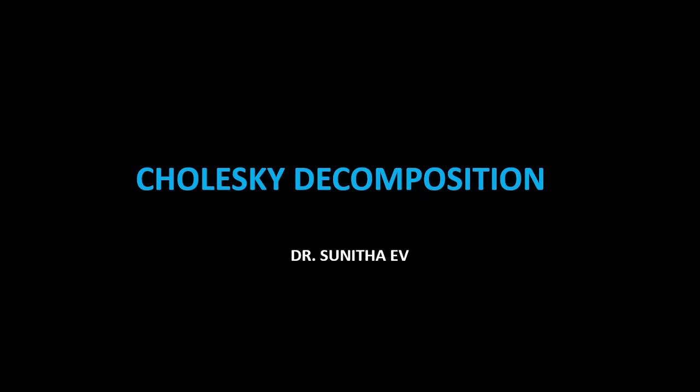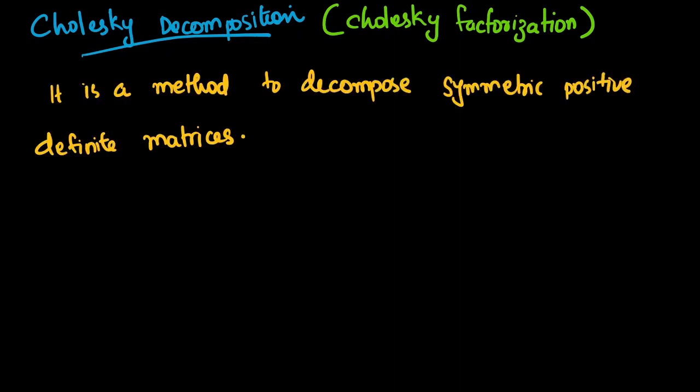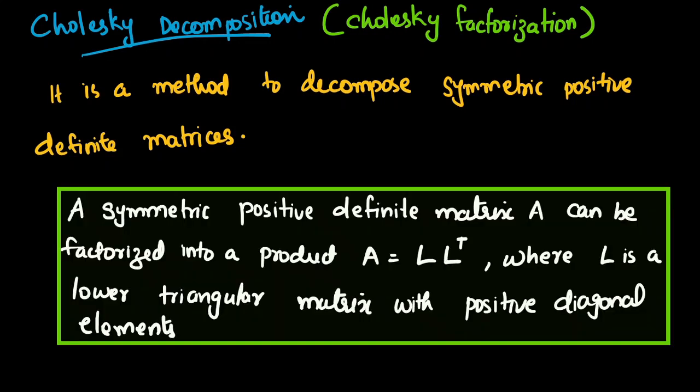Welcome to the session on Cholesky decomposition. This is another method of decomposing a matrix into simpler components. Cholesky decomposition, also called Cholesky factorization, is a method to decompose symmetric positive definite matrices. A symmetric positive definite matrix A can be factorized into a product L times L-transpose.